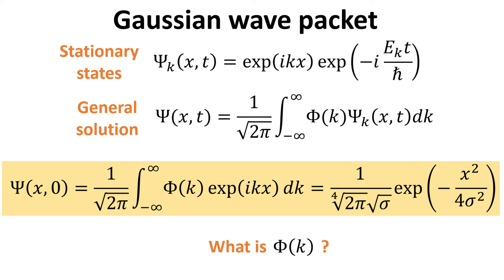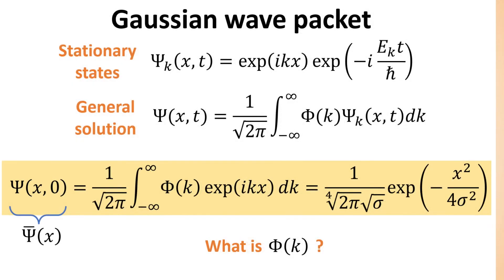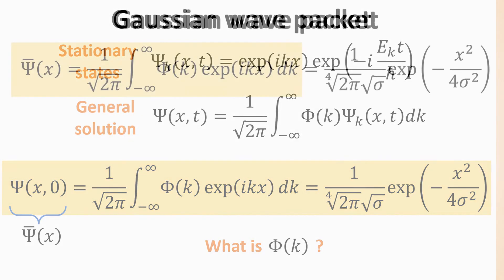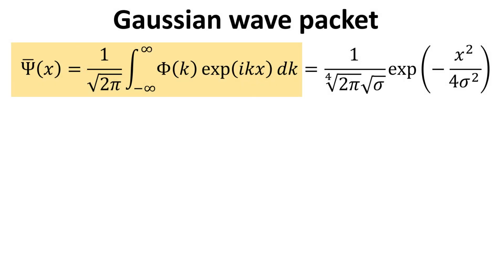Thus, the only unknown in the integral that we need to determine is the function phi(k). For cleaner notation, we shall denote the wave function psi at time zero as psi-bar. As shown in the yellow box, the functions psi-bar and phi are related through a Fourier transformation. The Fourier transformation turns it from a function of k to a function of x. We see that the dimensionality of x is length, while that of k is inverse length. Thus, the Fourier transformation maps the function into its reciprocal space representation.